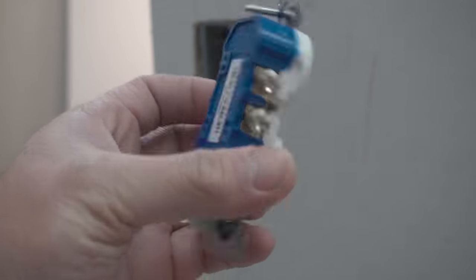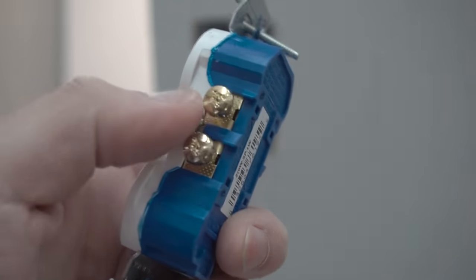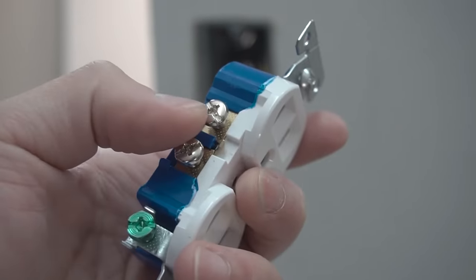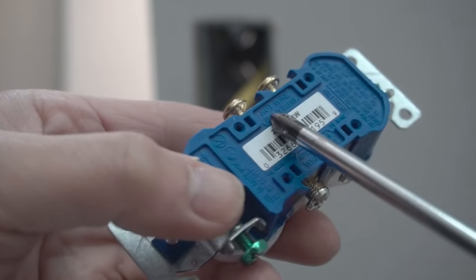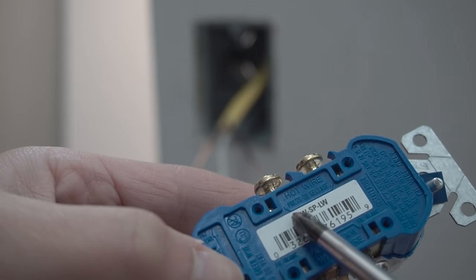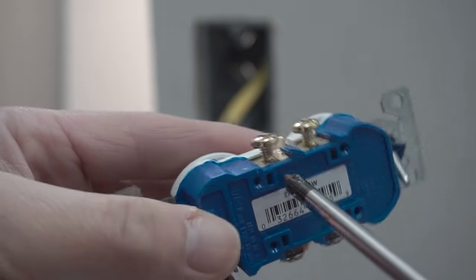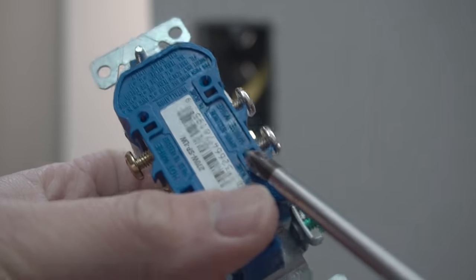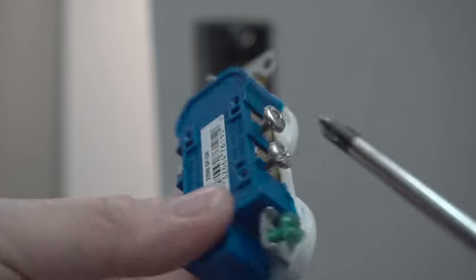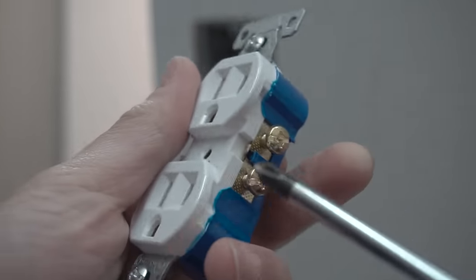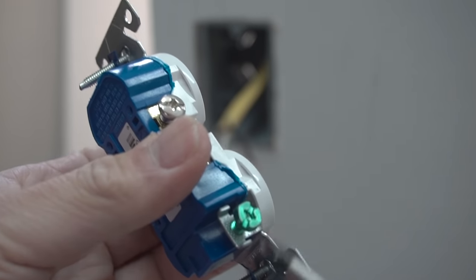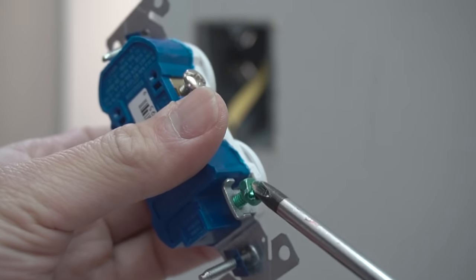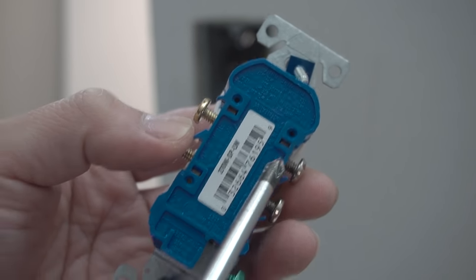Now we're looking at our receptacle. We got the gold or brass screws and the silver. It states right here on the back which one goes where—hot wire for the black side. It says here white, and silver is closest to white. This is the ground wire, which is always green.